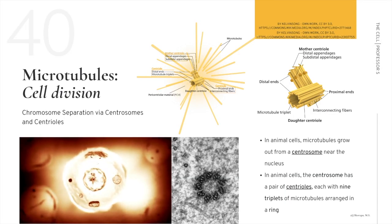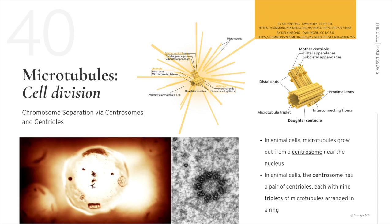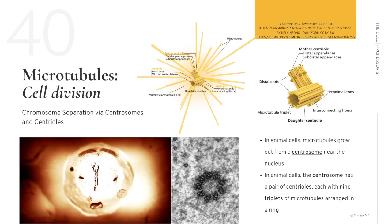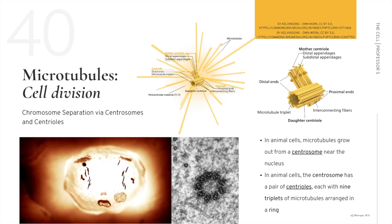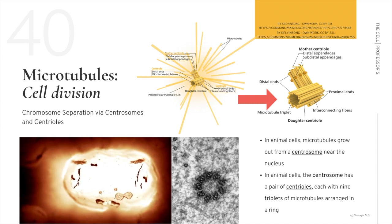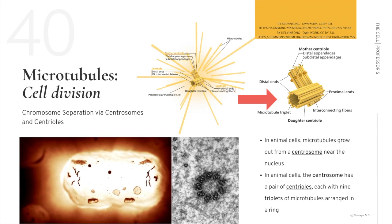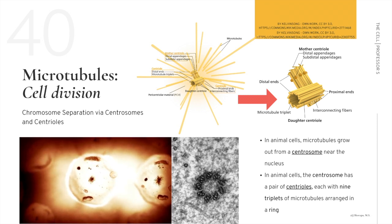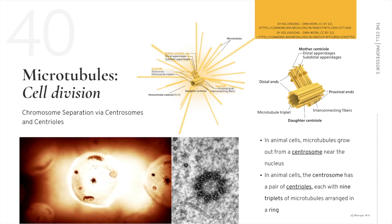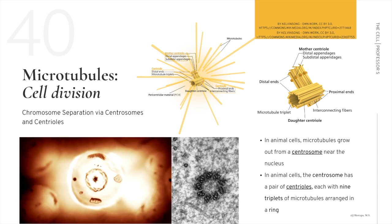Microtubules also separate chromosomes during cell division via centrosomes and centrioles. Centrosome means center body and serves as the microtubule organizing center in animal cells. Centrosomes are composed of two centrioles arranged at right angles to each other, surrounded by a mass of protein. The centrioles are cylindrical organelles each with nine triplets of microtubules arranged in a ring. In animal cells, microtubules grow out from a centrosome near the nucleus. The main function of centrioles is to produce the aster and spindles during cell division.